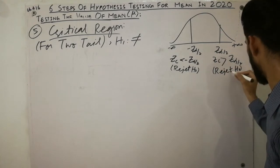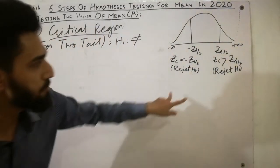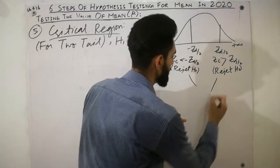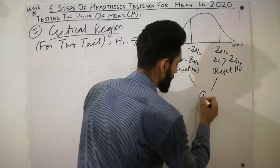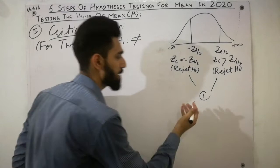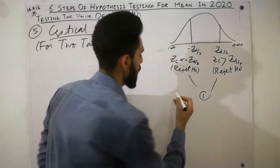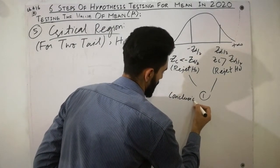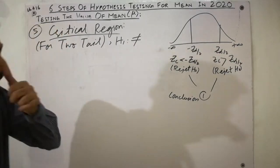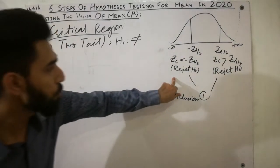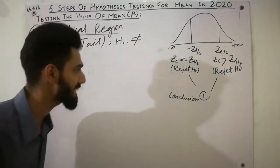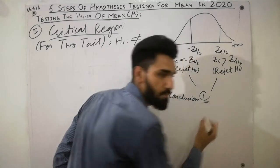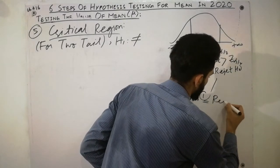In both cases — whether Z-calculated is less than minus Z-alpha/2 or greater than Z-alpha/2 — we reach the same conclusion: reject H-naught.